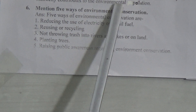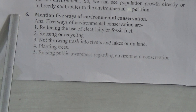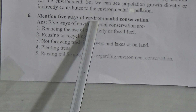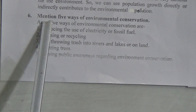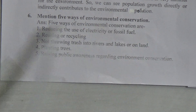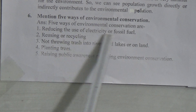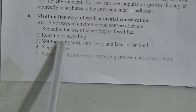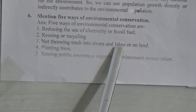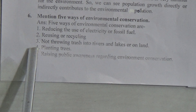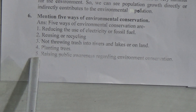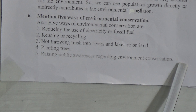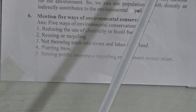So we can see that population growth directly or indirectly contributes to environmental pollution. CBQ 6: Mention five ways of environmental conservation. Answer: Five ways of environmental conservation are: first, reducing the use of electricity or fossil fuels; second, reusing or recycling; third, not throwing trash into rivers, lakes, or on land; fourth, planting trees; and fifth, raising public awareness regarding environmental conservation.